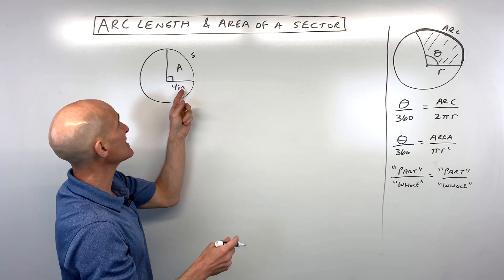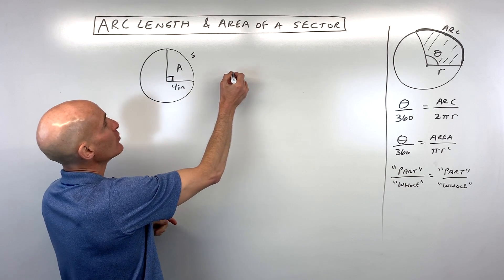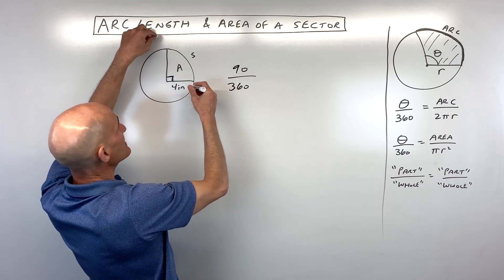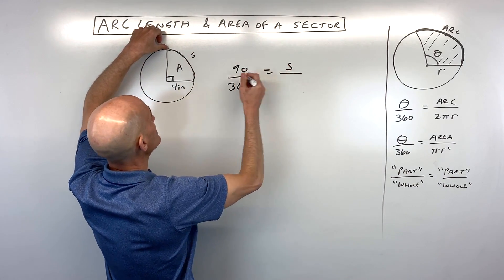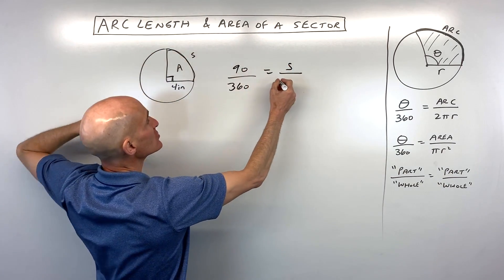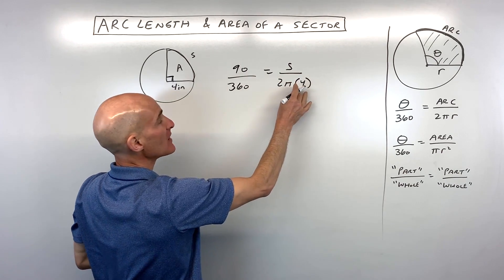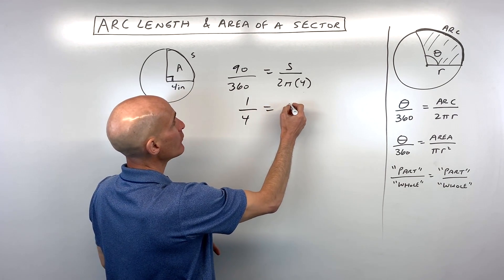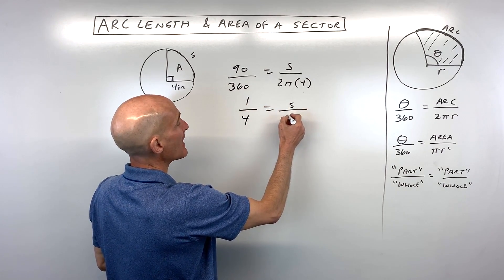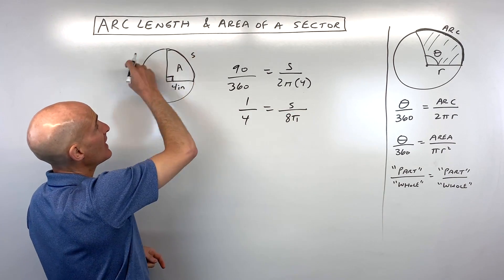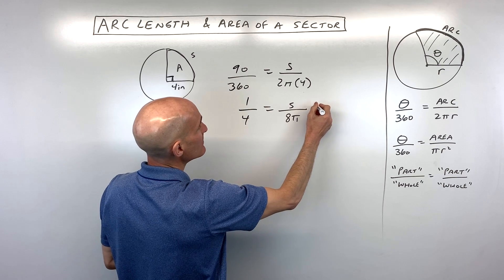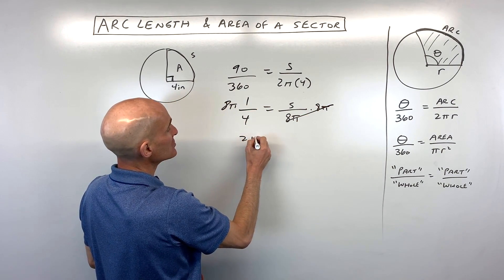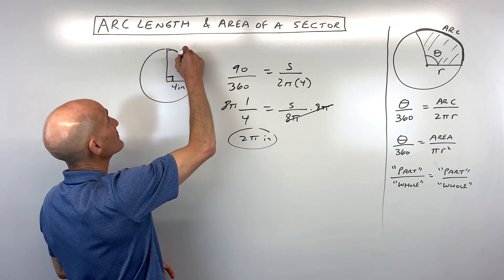Let me show you an introductory example. Say for example this angle was 90 degrees — we could say that 90 is to 360 as this arc length s is to the entire circumference, which is 2π times the radius, so 2πr. So we're doing 90 divided by 360, which reduces to one-fourth, equals the arc length s over the whole circumference which is 8π. We multiply both sides by 8π, and 8π divided by 4 is 2π inches. So that's the length of this arc.